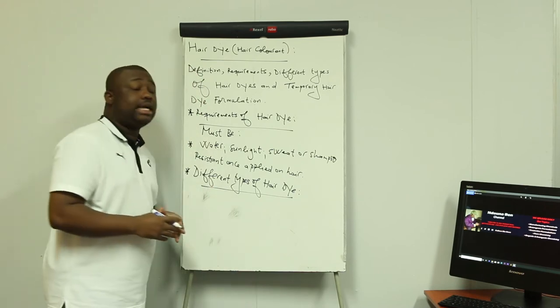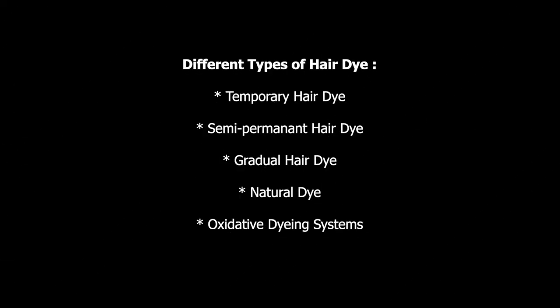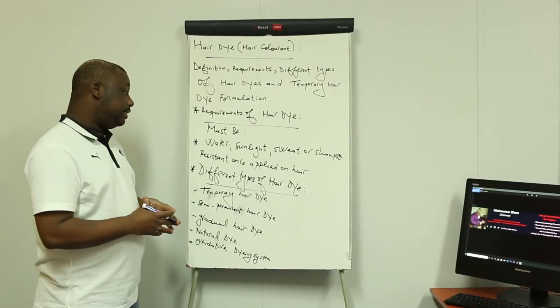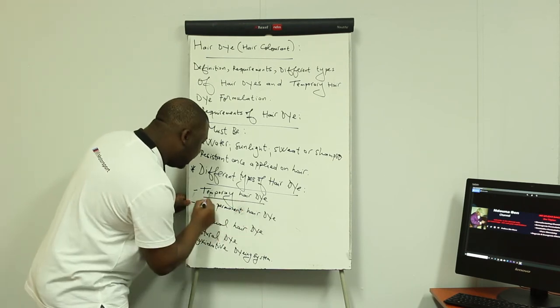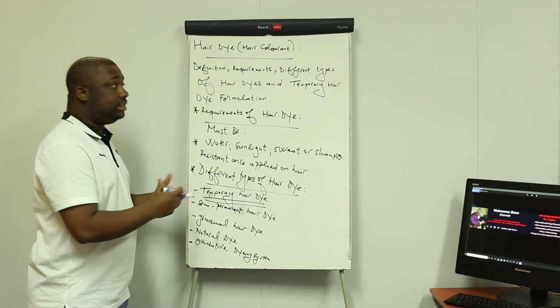The different types of hair dye are: temporary hair dyes, semi-permanent hair dye, gradual hair dye, natural hair dye, and we also have the oxidative hair dye system — within this category we also have a kind of permanent and semi-permanent hair dye. On this video we're going to describe the temporary hair dye.